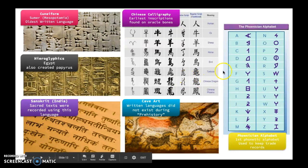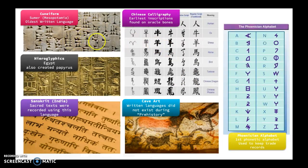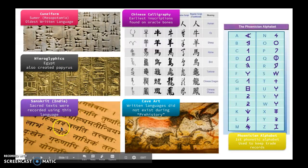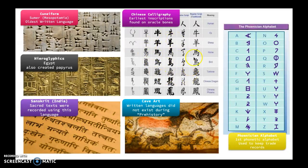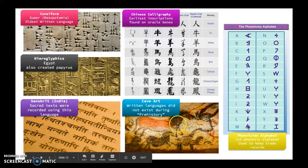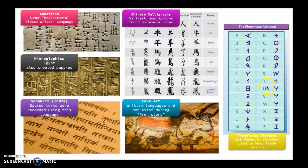Here's a visual look at the different writing systems. At the top you have cuneiform — you can see how the wedge created those letters. You have hieroglyphics, which are like pictograms. Sanskrit was the language in India. Chinese calligraphy looks like this in modern times. Cave art with pictures represents prehistory. And then you have the Phoenician alphabet, which is the phonetic alphabet that helped them keep records of trade.